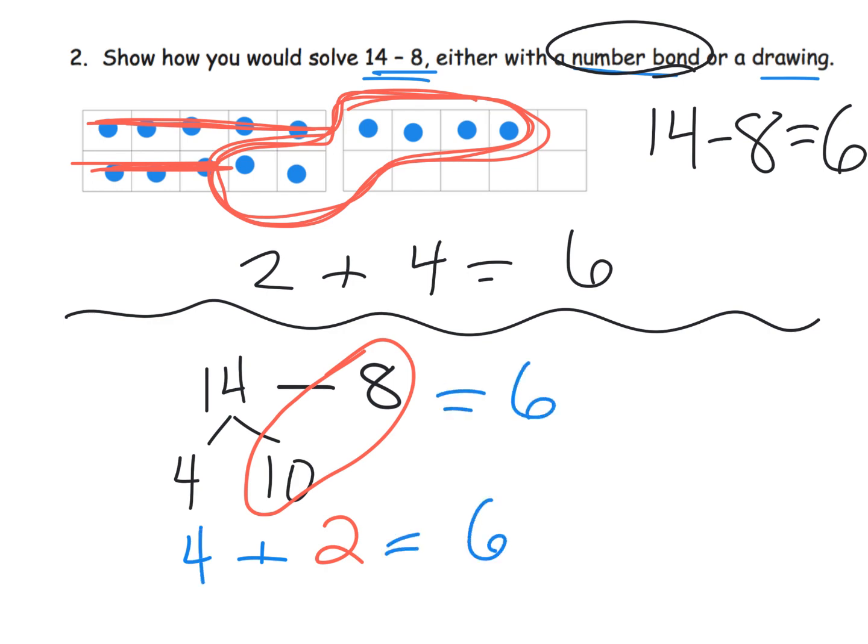So 14 minus 8. So now we see that 10 minus 8 is 2 plus we have that original 4 sitting there so our answer is again 6. So 14 minus 8 is 6. So you have two methods. You have the drawing method up here. You have the number bond method down here using the subtract from 10 method.